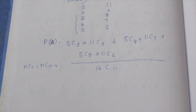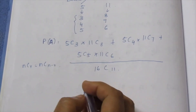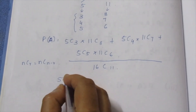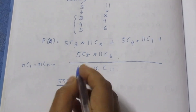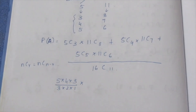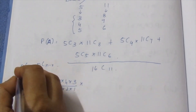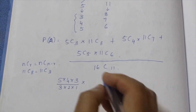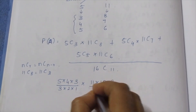The combination formula nCr is used here. For example, 5C3 equals 5 × 4 × 3 divided by 3 factorial. And 11C8 equals 11C(11−8) = 11C3, which is 11 × 10 × 9 divided by 3 factorial, giving 3 × 2 × 1.